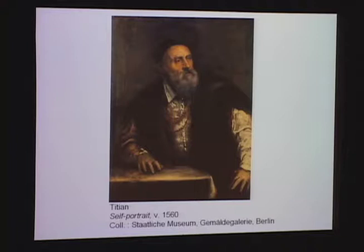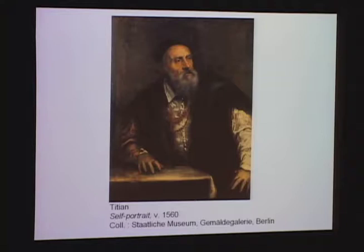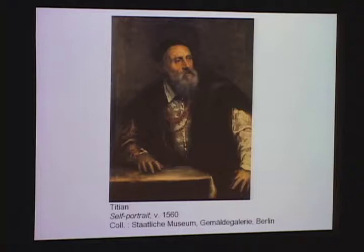Titian also used his age to get more money. Writing to King Philip IV of Spain, after working seven years on a Last Supper, he said he would continue serving the king up to his death — implying it was the last thing he would do. When you read this, you have the feeling he's at the end of his life, but in fact he lived another 13 years after writing that letter. He used his age strategically to extract more payment.